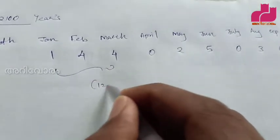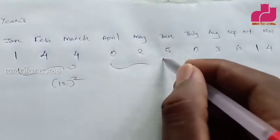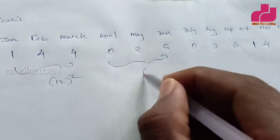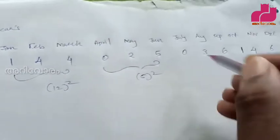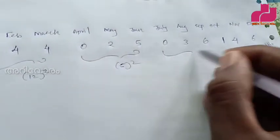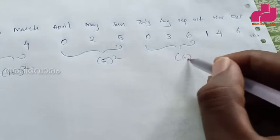If we just add value to a square, these are 5 square. This square is 6 square.